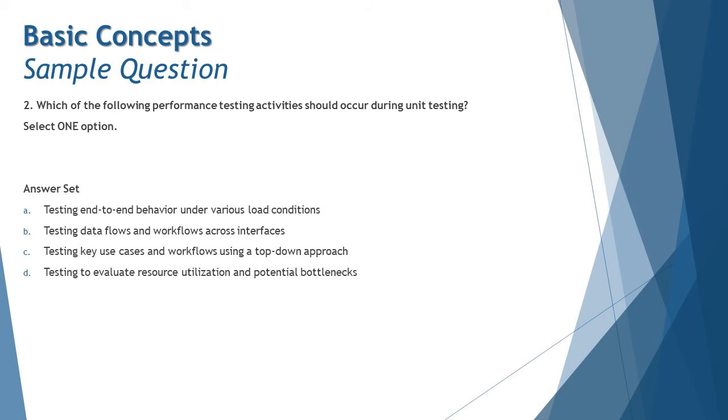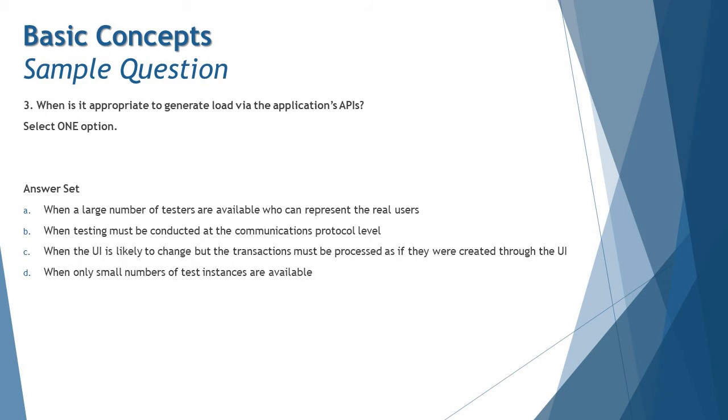bottom-up approach to be applied there during integration testing. Last but not least seems to be the right answer: Option D, testing to evaluate resource utilization and potential bottlenecks. This can be identified right at the unit level because we are talking about the response codes, resource utilization of every single program. That can be done right at the unit level. You don't really have to wait for the system to be established and then tested.